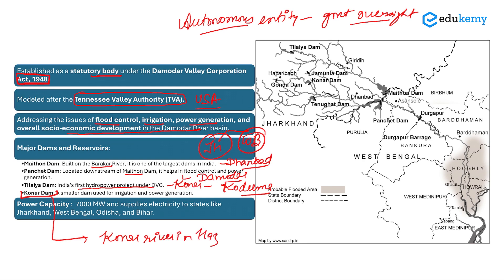Konar Dam is also used for irrigation and power generation. You can see all these dams in the map given here — Meithon Dam, Tilaya Dam, Panchet Dam, and Konar Dam. These are the four important dams you need to remember when talking about Damodar Valley Corporation.